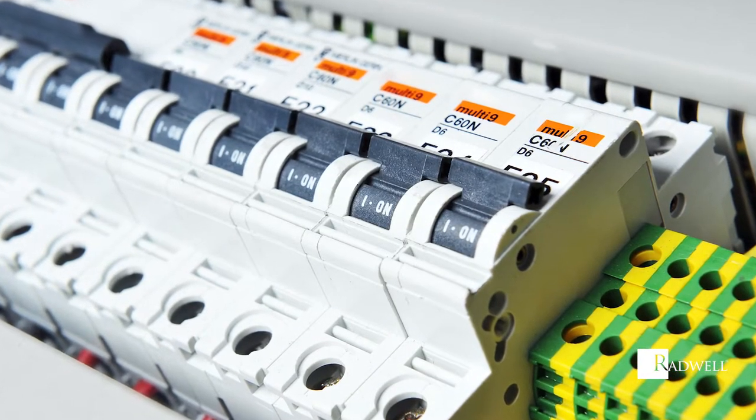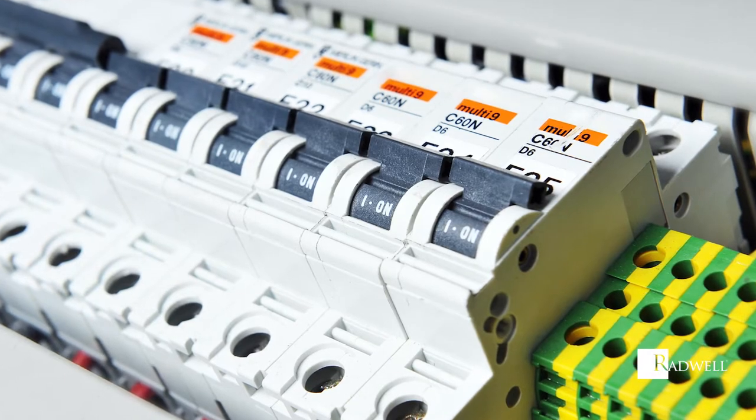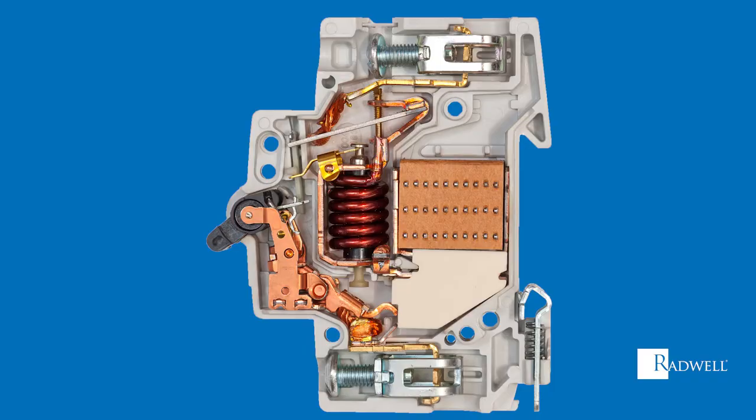There are five key components that make up a circuit breaker. The first component is the molded case or frame. The case or frame is what houses, supports, and insulates the unit.